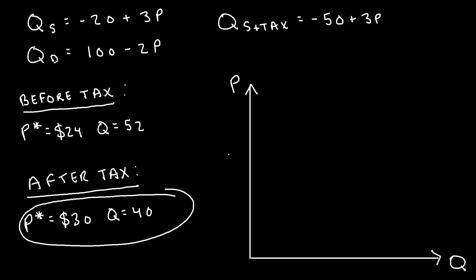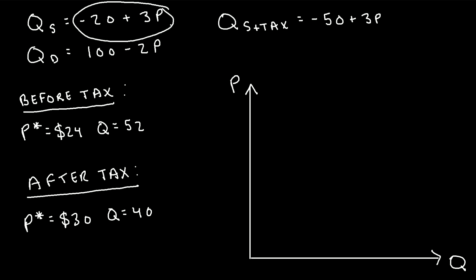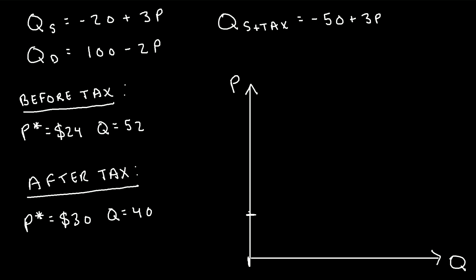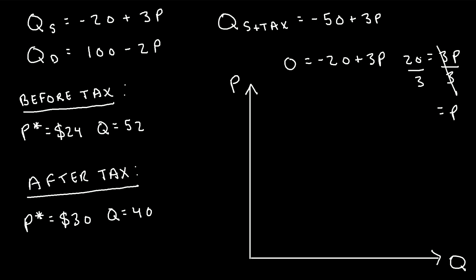Here's our original quantity supplied equation. Let's graph it on a graph where p, the price, is on the y-axis and q, the quantity, is on the x-axis. To graph this equation, we plug in zero for quantity supplied and solve for p, finding where the supply curve intersects the price axis. Zero equals negative 20 plus 3p gives us p equal to 20 over 3, which is about 6.67. So the supply curve crosses the p-axis at 6.67 and slopes upward. This is our original supply curve.